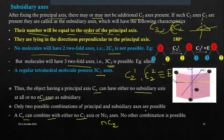Only two possible combinations of principal and subsidiary axes are possible: a CN can combine with either no C2 or N C2s — no other combinations are possible. The significance of identifying the principal and subsidiary axes is that when discussing planes of symmetry, we will discuss the various planes with respect to the principal axis. Once you identify the principal axis, you can recognize the various plane-of-symmetry elements.